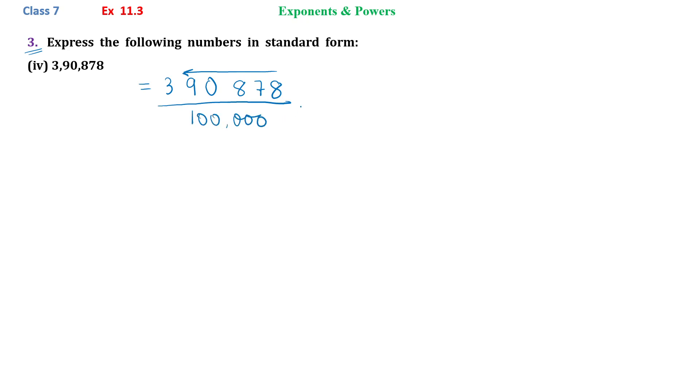If we are dividing it by 1 lakh, so definitely we need to multiply also by 1 lakh. So now this fraction can be written in form of decimal number that is 3.90878 and the remaining 1 lakh can be written as 10 to the power 5.